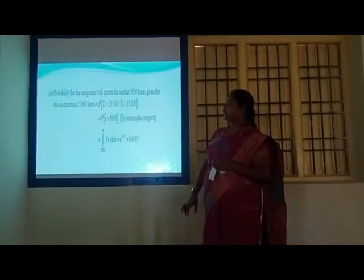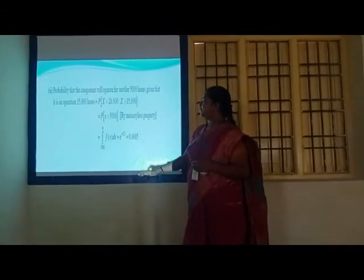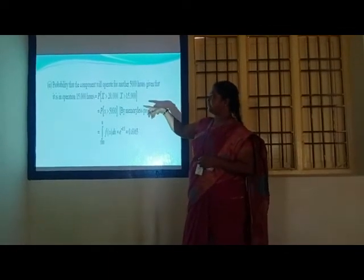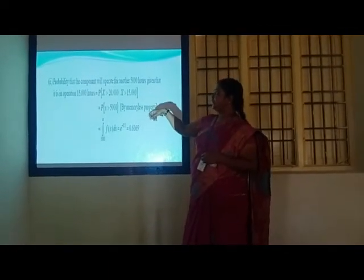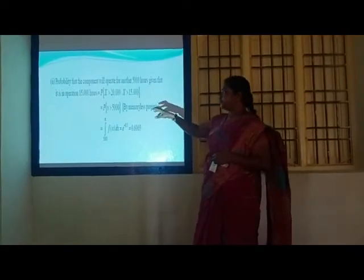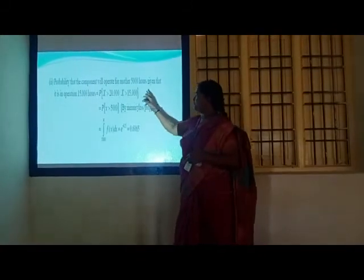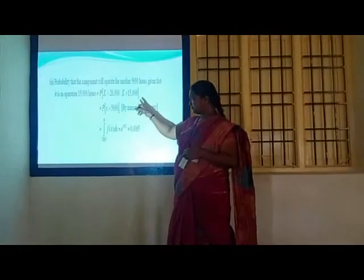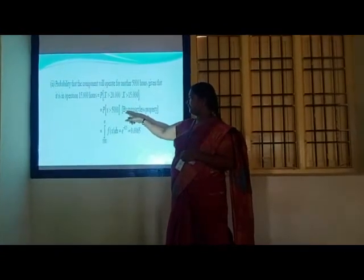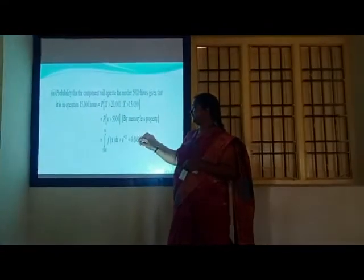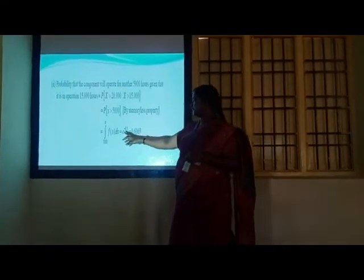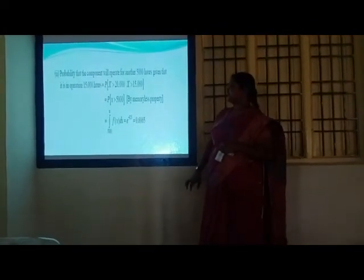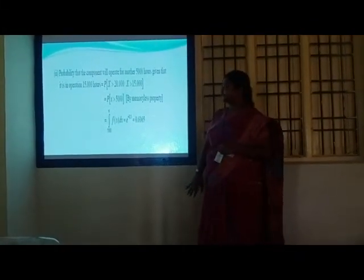Second sub-question: given operation at 15,000 hours, what is the probability it will operate another 5,000 hours (beyond 20,000 hours)? Using the memoryless property, P(X > 20,000 | X > 15,000) = P(X > 5,000). Integrating with respect to x, the answer is approximately 0.6065.